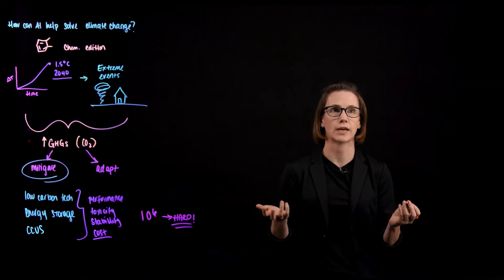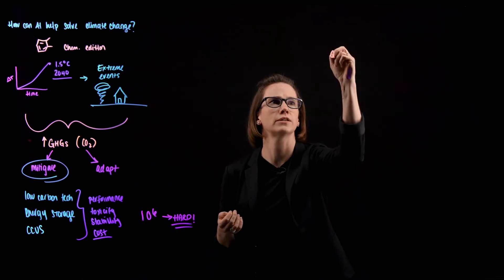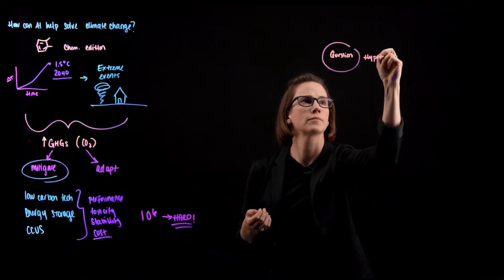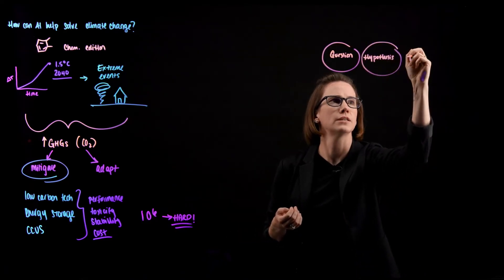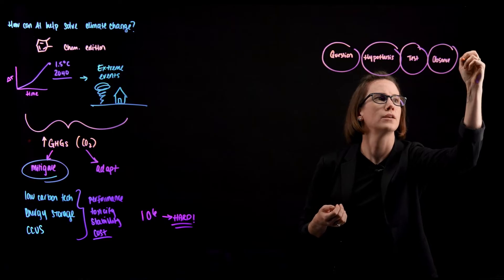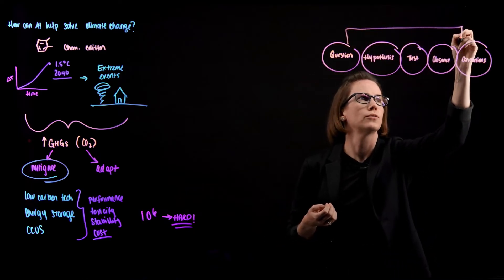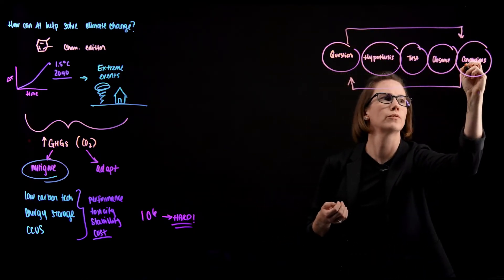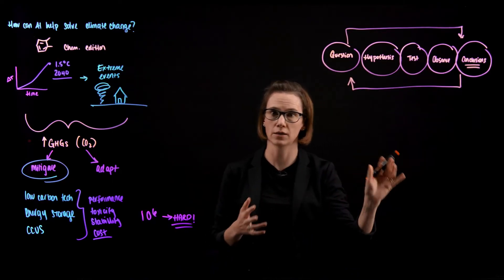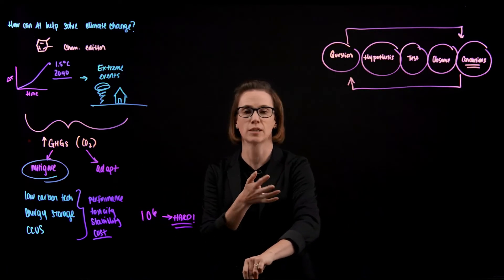So if we go back to our high school science class and we think about the tried and true scientific method, it looks a little bit something like this. So you have a question. You have a hypothesis. You test that hypothesis with experiments. You observe the results. And then you draw some conclusions. And then we iterate through this many, many times before we really decide on some fundamental conclusions from our experiments. So this can take a long time to do, especially if you have lots of different conditions that you have to try. And we can use AI to speed this process up and make it work better.